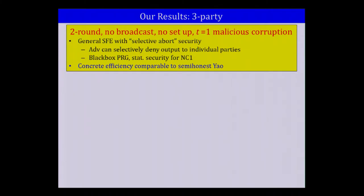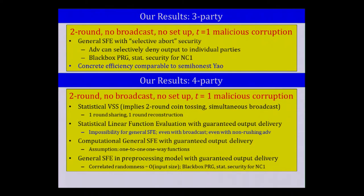This contrasts with two-party computation, where guaranteeing security against one malicious corruption requires an overhead proportional to the statistical security parameter — here we avoid that. In the four-party setting, we get a variety of results. In particular, we get statistical VSS with one-round sharing and one-round reconstruction. This implies two-round coin tossing and two-round simultaneous broadcast, and we can upgrade this to statistical general linear function evaluation with guaranteed output delivery.